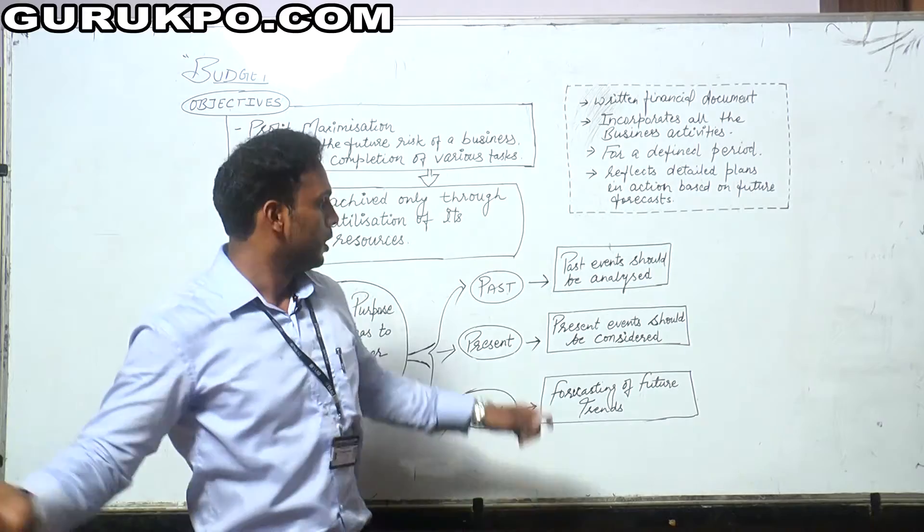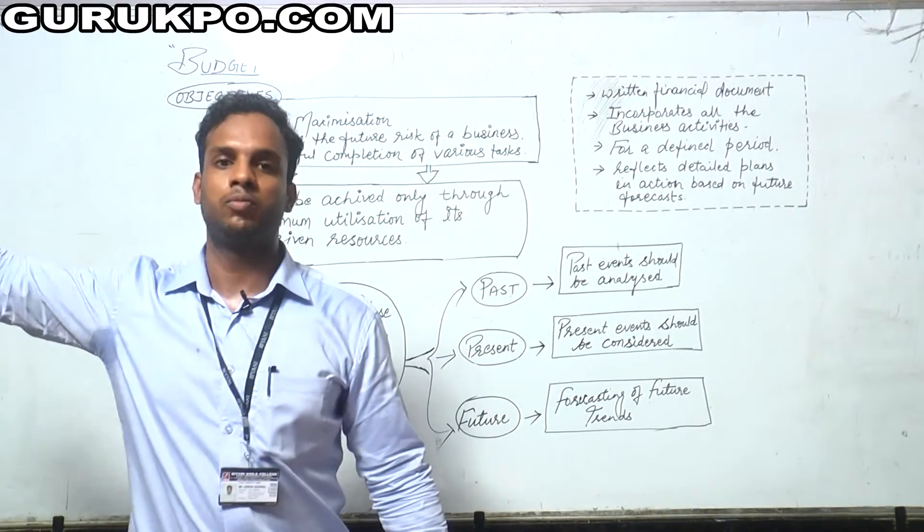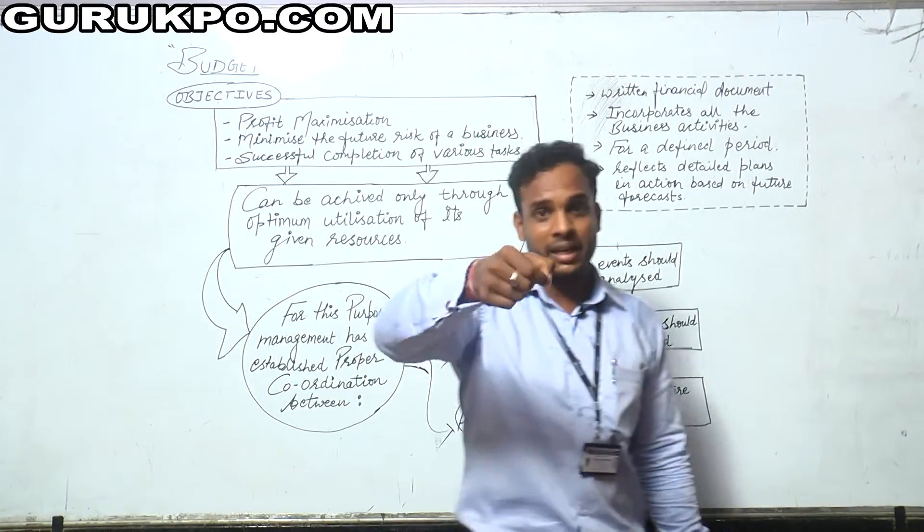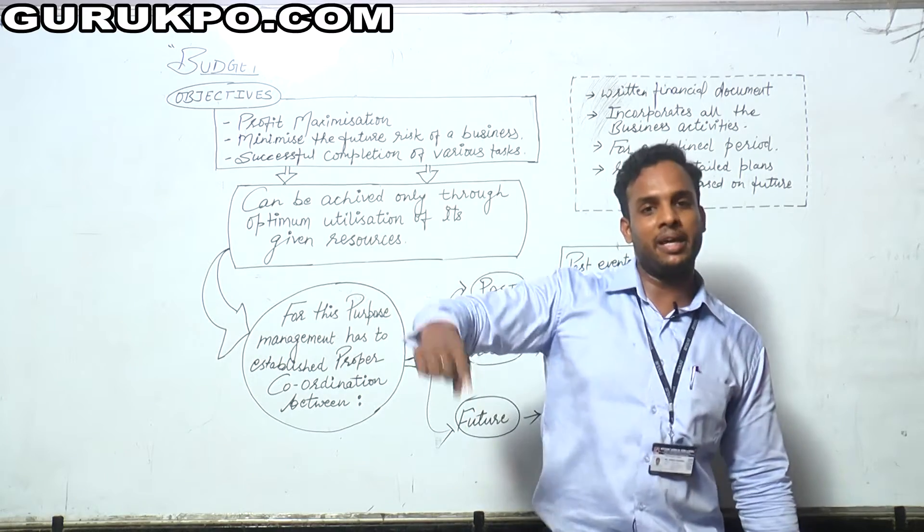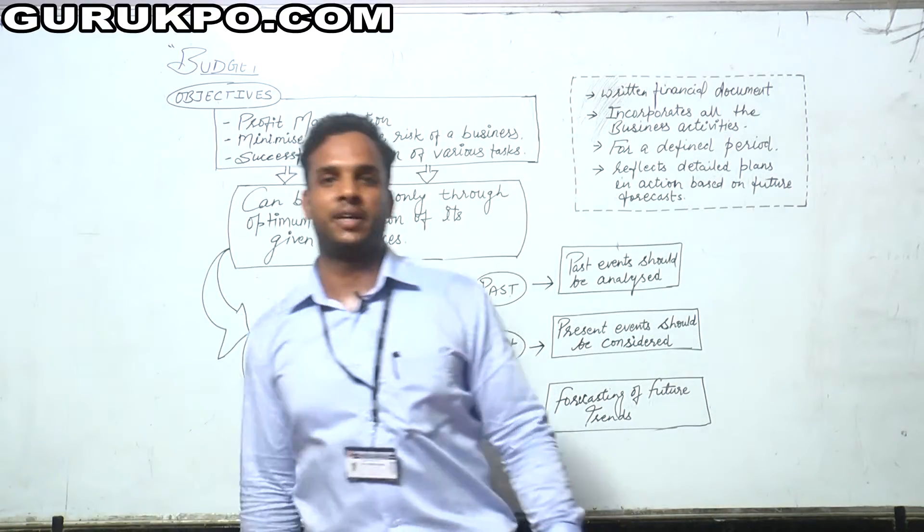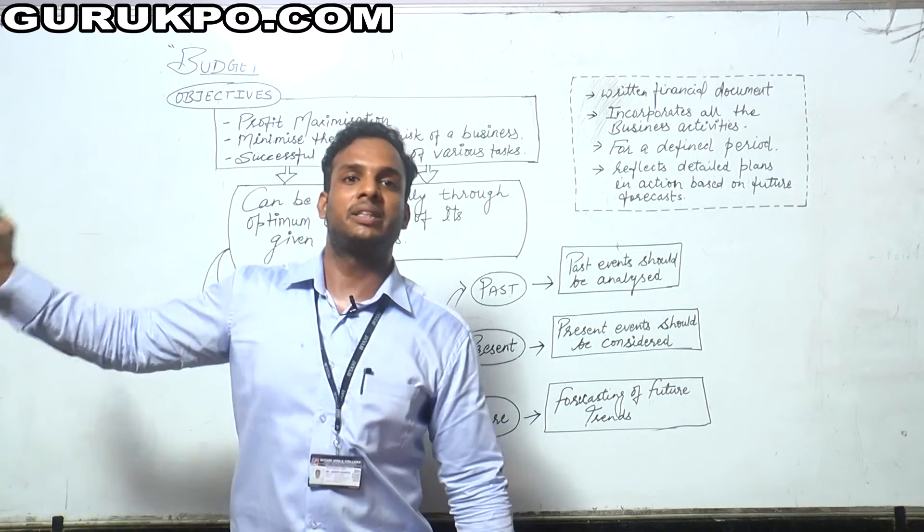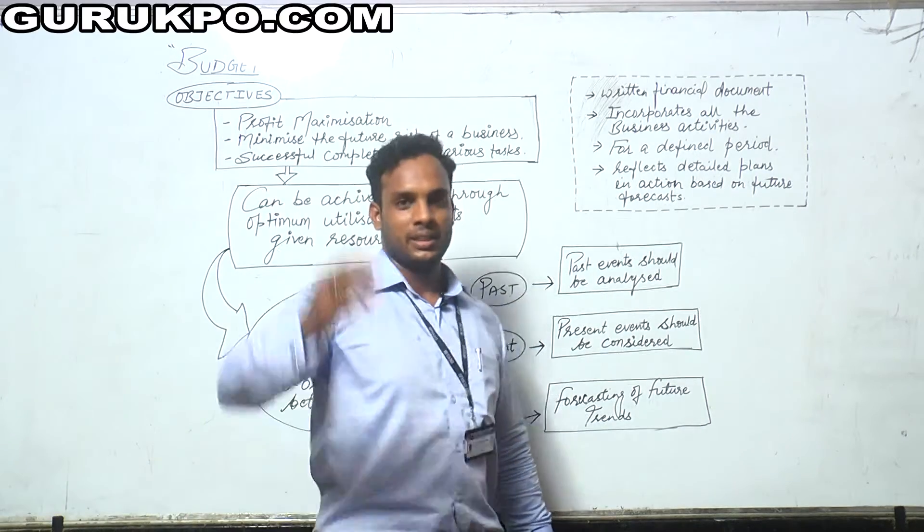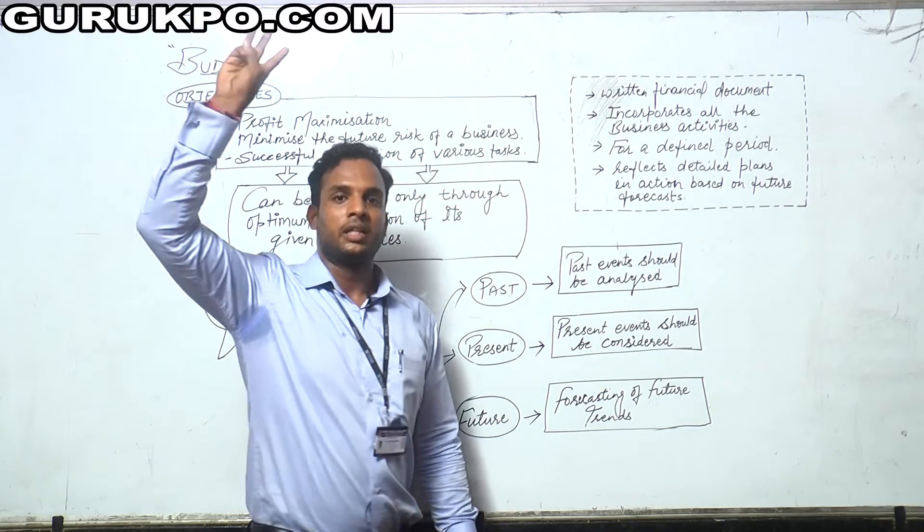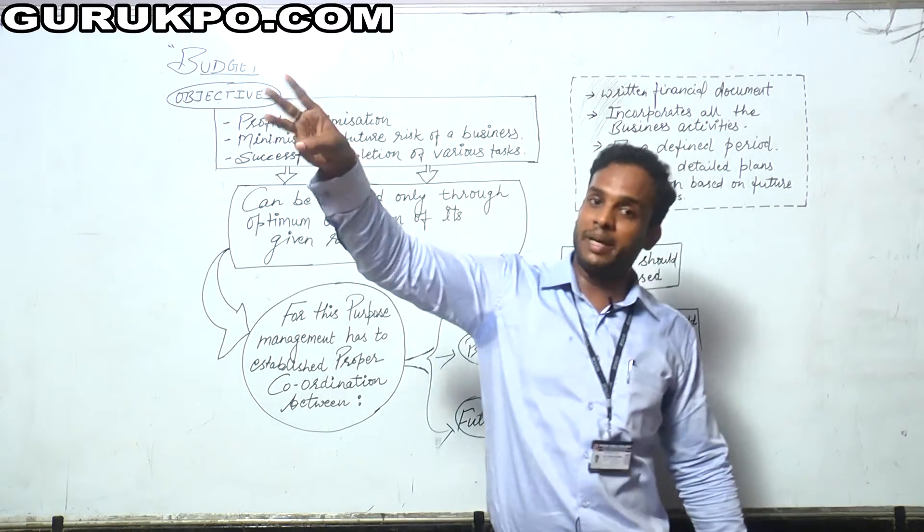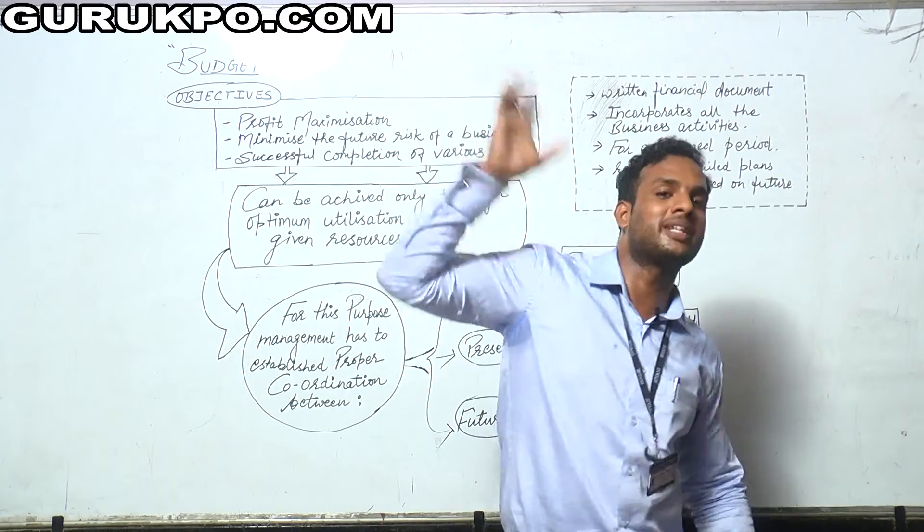For example, first point: we need to buy a car. Second: we need to buy a car next month, meaning in September. Third: we need to buy a car in September for 10 lakh rupees. Fourth: we need to buy a car in September for 10 lakh rupees on the 15th. Four points are written - buying a car, in September, for 10 lakh rupees, and on the 15th.